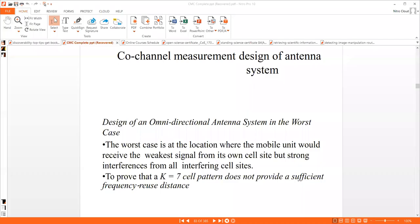Let us look at the design of an omnidirectional antenna system in the worst case. The worst case is at the location where the mobile unit would receive the weakest signal from its own cell site but strong interferences from all interfering cell sites.